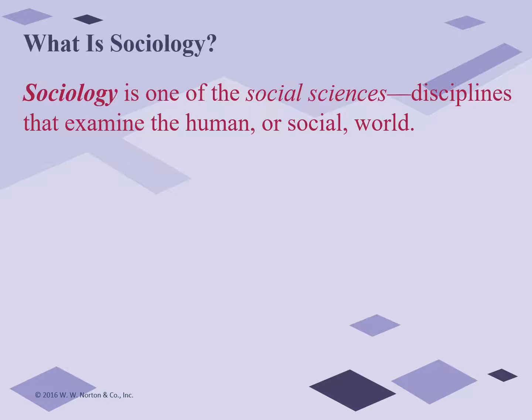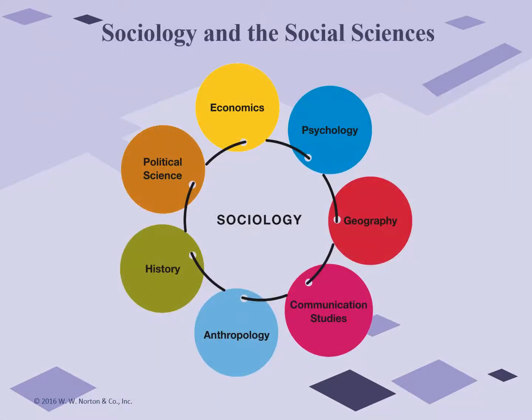Social scientists employ many different kinds of research methods, and we'll learn about those later in this course. You'll also find that sociology overlaps with other social sciences, but there are also some things that are unique to sociology and the territory that it covers can be quite unique.